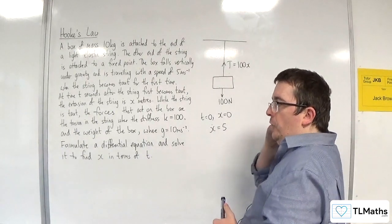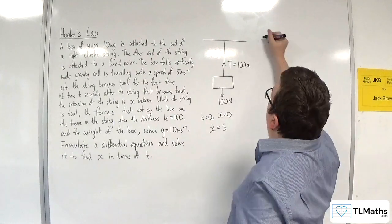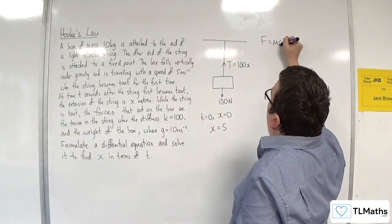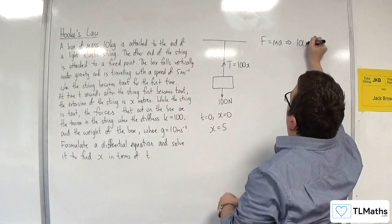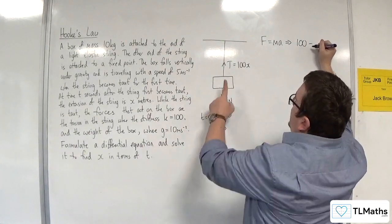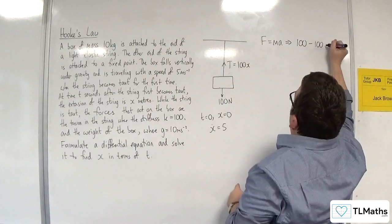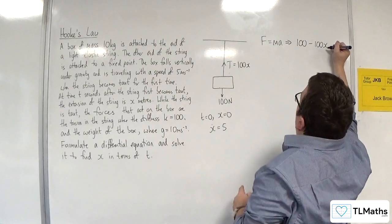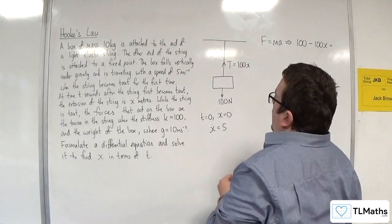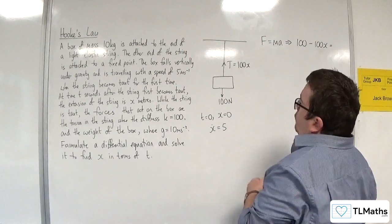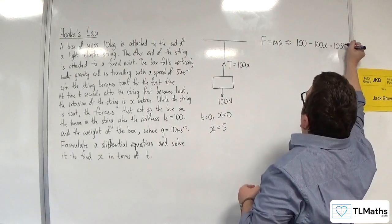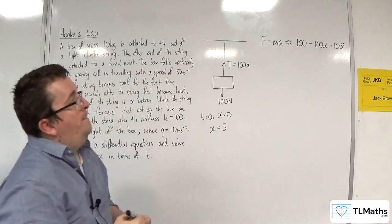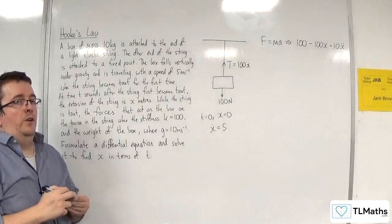Formulate a differential equation and solve it to find x in terms of t. So we're going to use F equals ma. Taking downwards as positive, we've got the 100 newton force take away the tension of the string, which we know to be 100x, and that's going to have to be equal to the mass times acceleration, which is 10 times x double dot.